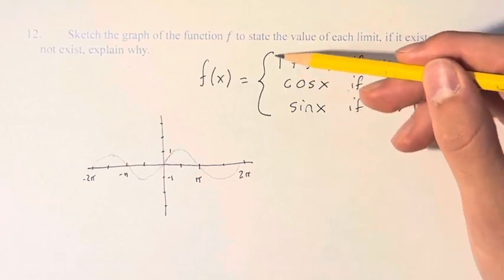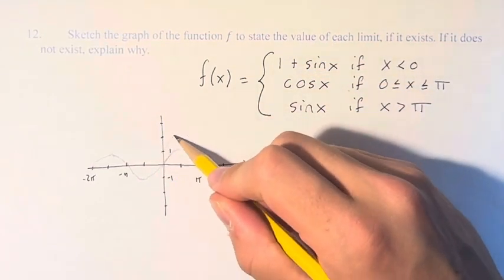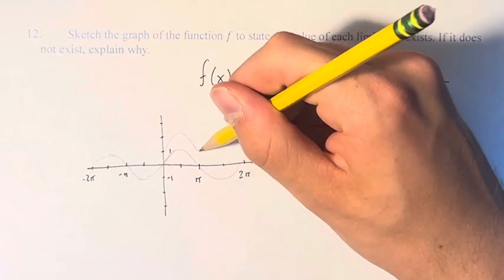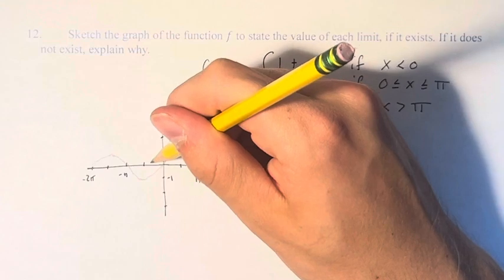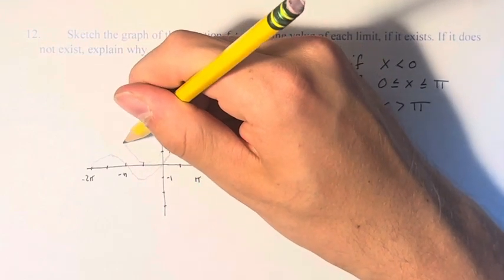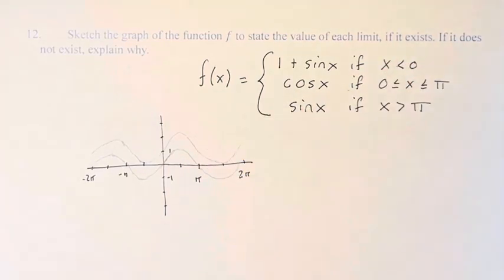1 plus sine of x, using the transformations we learned in the last chapter, is just sine of x moved up one unit. And so that looks a little bit like this, where we've simply moved the function up one unit.